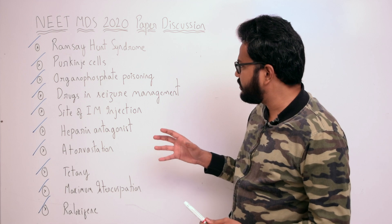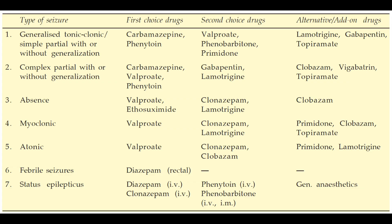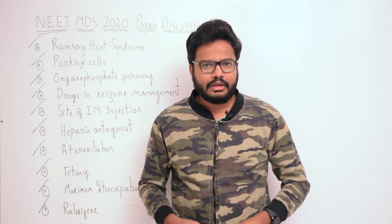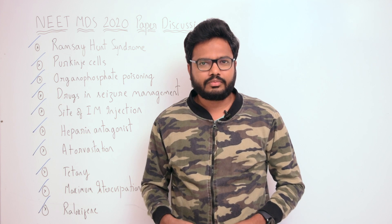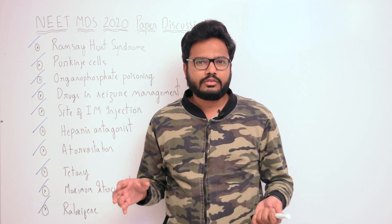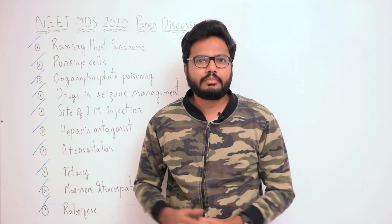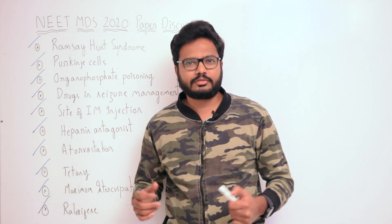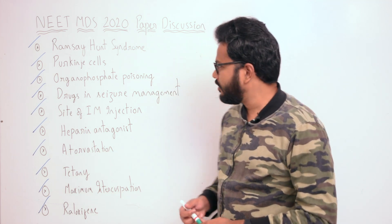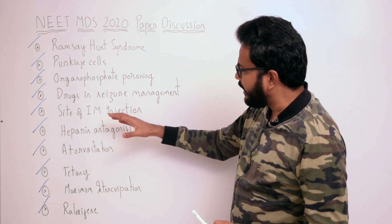Regarding drugs in seizure management, looking at the table we have first-choice drugs, second-choice drugs, and alternate drugs for various types of seizures. In the case of status epilepticus, it is diazepam — a benzodiazepine — given intravenously. For any specific question on this table, additional information will be updated in the video description.